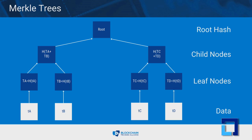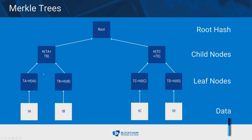Let's take a look at a diagram of a Merkle tree. This diagram consists of 4 transactions represented as transaction A, transaction B, C, and D. The transaction data is then hashed and the resulting hashes are stored in leaf nodes represented as H_A, H_B, H_C, and H_D.